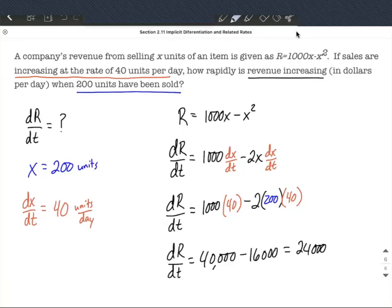So overall, our revenue is going to be given by, well I guess this is in dollars per day. Alright, revenue is in dollars normally, so we're taking the derivative with respect to time, our units for that is in days. So $24,000 per day.